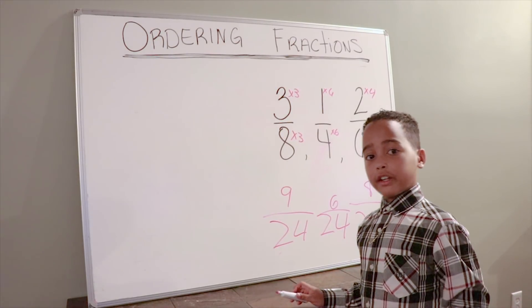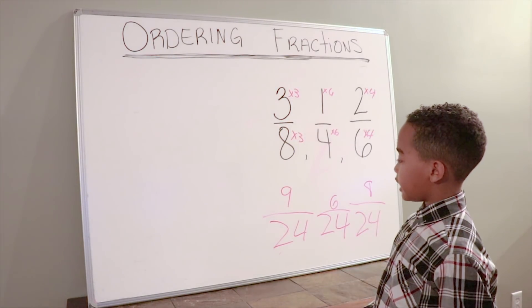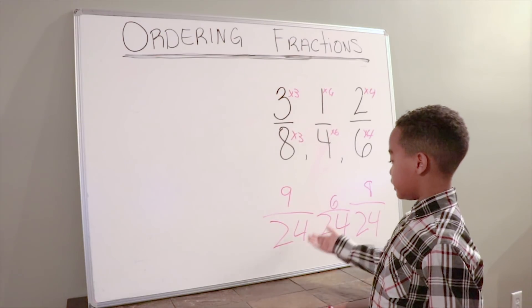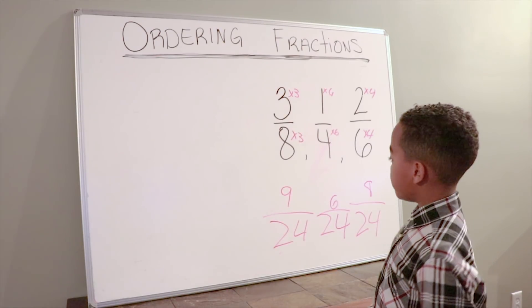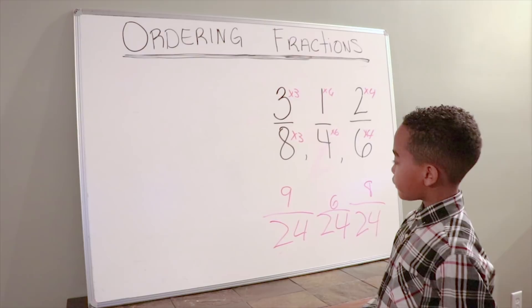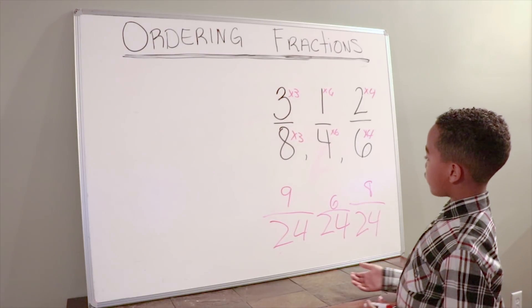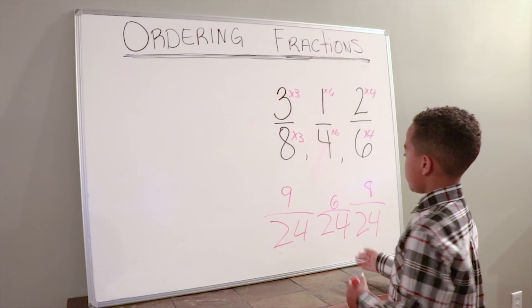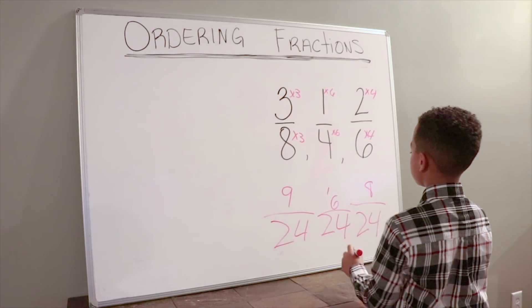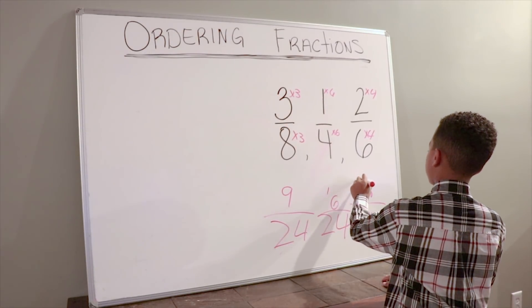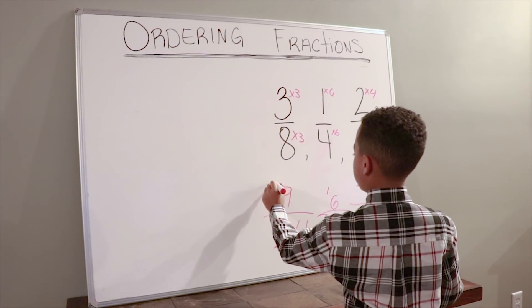Now what we're going to do is order the fractions. The numerators are the same, so we're just... I mean the denominators are the same, so we're just going to worry about the numerators. We're going to put the numerators in order from least to greatest. First there's 6 for 1 fourth, then there's 8, then there's 9.